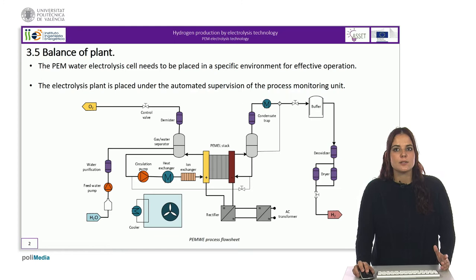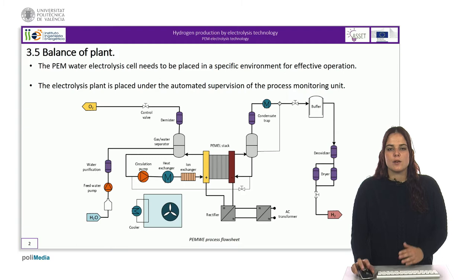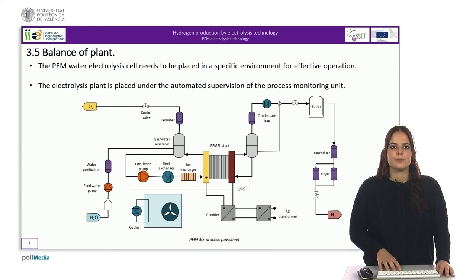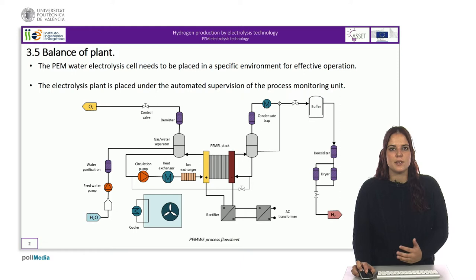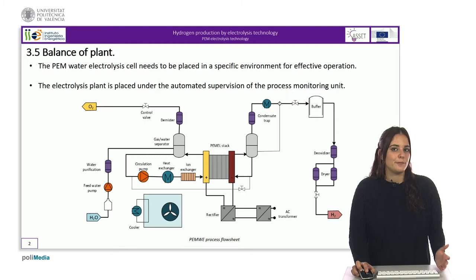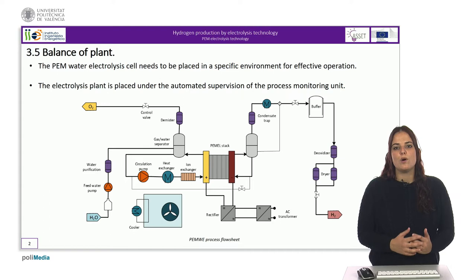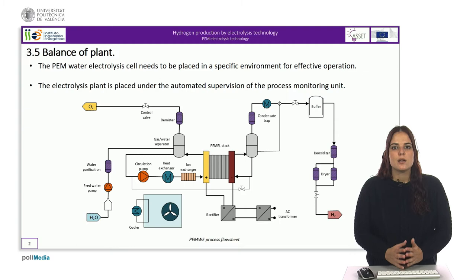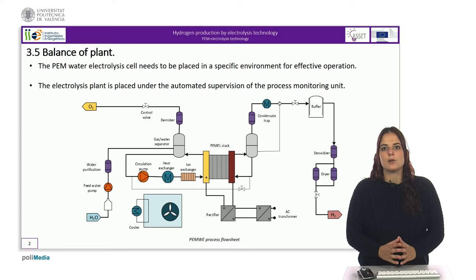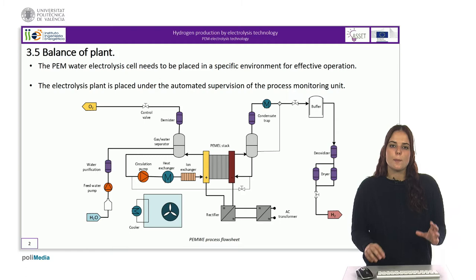The PIM water electrolysis cell or stack needs to be placed in a specific environment for effective operation. For example, it is necessary to provide water of adequate purity and to supply that water to the cell or stack in order to feed the reaction. It is also important to remove the excess heat produced by internal dissipation during operation at non-zero current density. It is required to maintain the level of water purity during operation and to recycle the flow of electroosmotic water, and to extract from the cell the reaction products and treat them to adjust their chemical composition to downstream requirements. All these operations are achieved by a number of dedicated subunits that form together the so-called balance of plant.